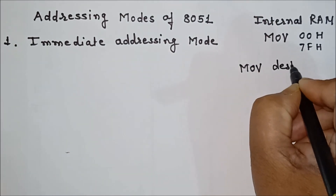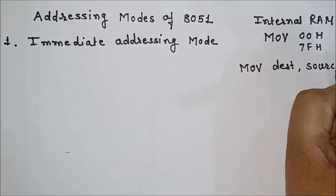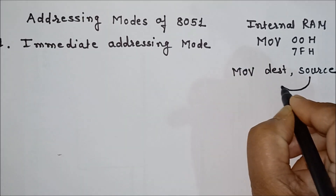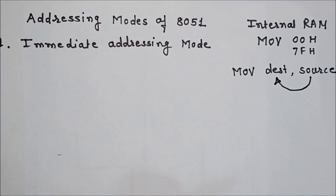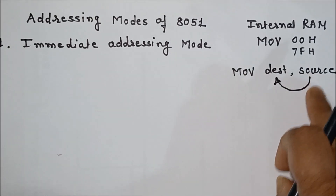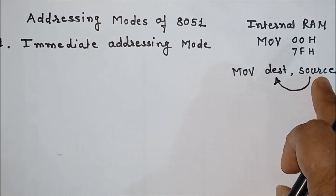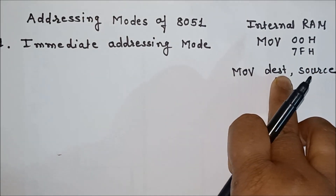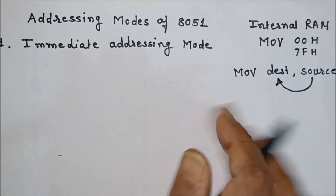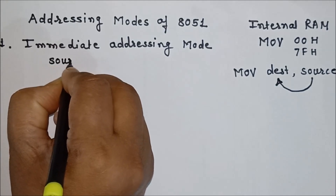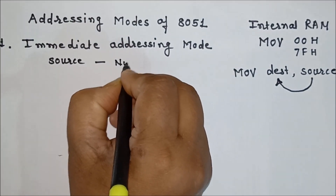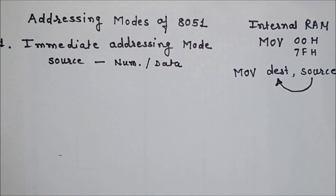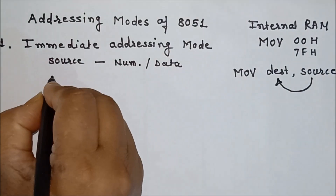The general format of the MOV instruction is: MOV destination, source. This MOV instruction moves the contents of the source location to the destination location — it is like copy and paste. The source data will not change, but the data of source will be copied to the destination. In immediate addressing mode, the source is an immediate number, that is, data.